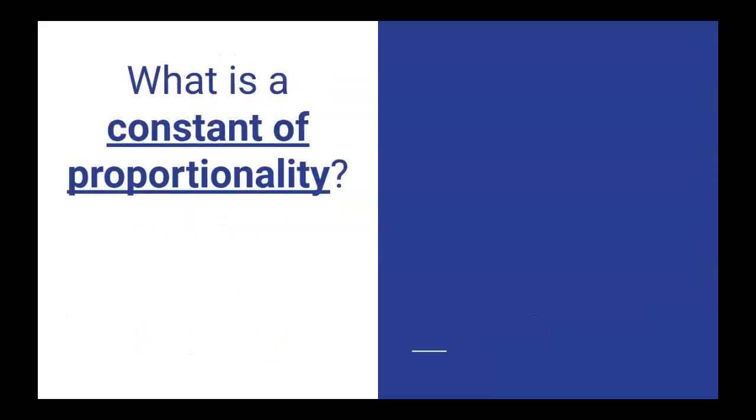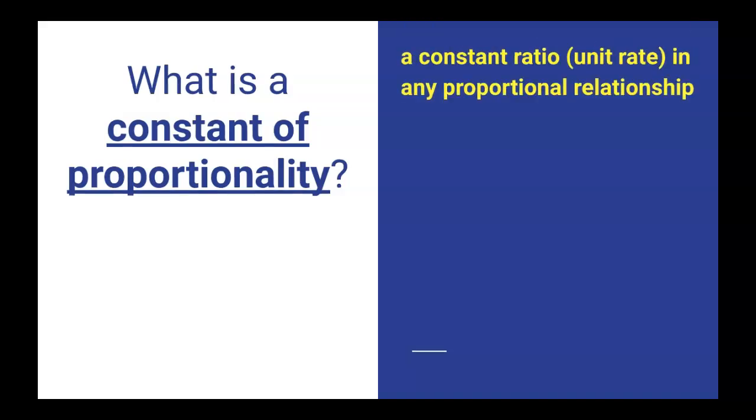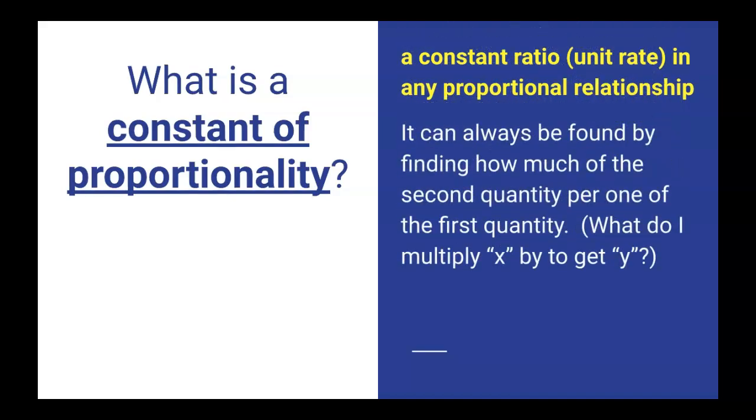Another strategy, a second strategy, is looking for the constant of proportionality. And so what is that constant of proportionality? It's a constant ratio. We sometimes call it a unit rate in any proportional relationship. It can always be found by finding how much of the second quantity per one of the first quantity. In other words, what do I multiply x by to get y? Or what do I multiply that first number by to get that second number?